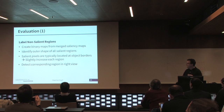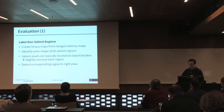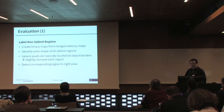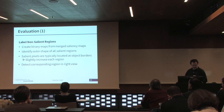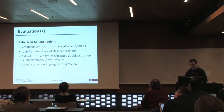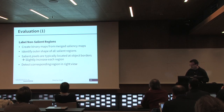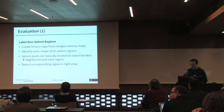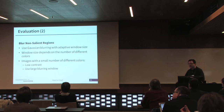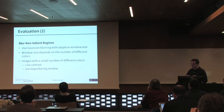For our results, the first step was to mark all regions that are not salient. We used the merged saliency maps, created a binary map, and identified the outer shapes for all these regions. We slightly increased these regions because saliency pixels are usually located just at the borders of salient objects, and especially in motion saliency there is some time gap until the correct region is detected due to motion history. We also detected the corresponding region in the second view. For our user evaluation, we blurred — heavily blurred — the non-salient pixels using Gaussian blurring with an adaptive window size.